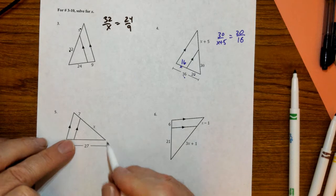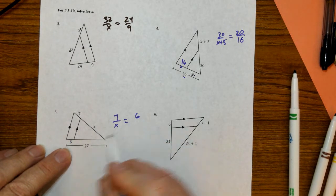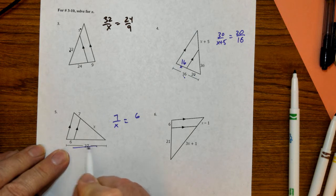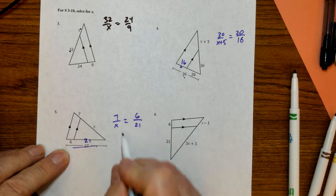Number 5, 7 is to X as 6, well, this is part plus part equals whole. So this is the whole. Subtract the part, you get 21. Do your cross product, solve for X.